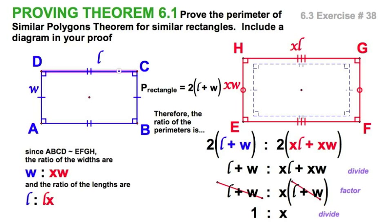The ratio of these sides we started with is one to x. This side ratio is one to x. And the ratio of the perimeters is one to x. So there you have it. Theorem 6.1, for rectangles.